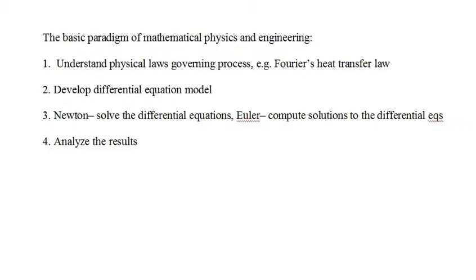In Mathematical Modeling and Computational Calculus 1, we used Euler's method to compute solutions to ordinary differential equations — that is, differential equations with one independent variable, and that variable was always time. In Mathematical Modeling and Computational Calculus 2, we will use the finite difference method, which is Euler's method extended to partial differential equations, to compute solutions with two or three independent variables: time and one or two spatial variables. The fourth step is to analyze the results of step 3.